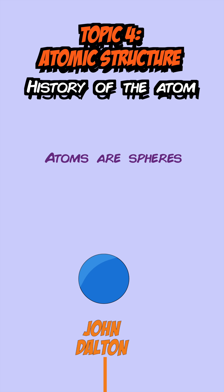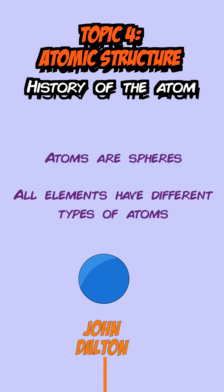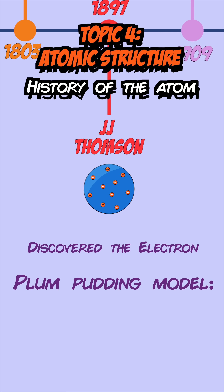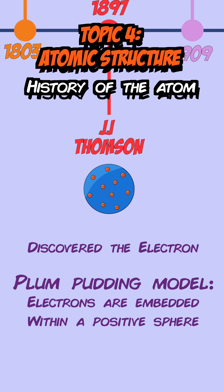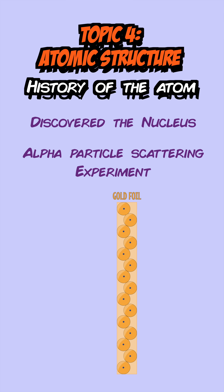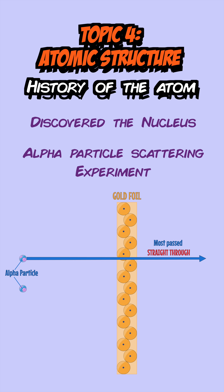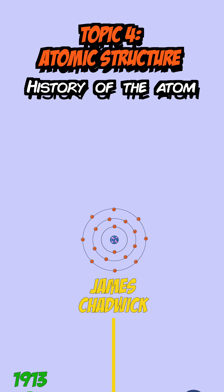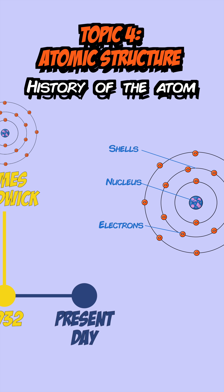Topic 4 is atomic structure. The model of what we think an atom is has changed a lot throughout history. John Dalton said atoms were spheres where each element had a specific type of atom. J.J. Thomson then discovered the electron and came up with the plum pudding model, where electrons were embedded within a positive sphere. Ernst Rutherford discovered the nucleus by carrying out the alpha particle scattering experiment, finding that alpha particles mostly passed straight through a piece of gold foil while a few were deflected. Niels Bohr discovered the proton and said electrons orbited the nucleus at fixed distances known as shells. Finally, James Chadwick discovered the neutron, which led to the structure of the atom we use today.